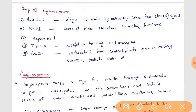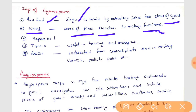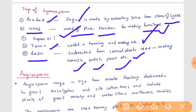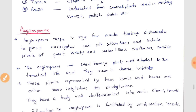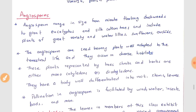Gymnosperms have many uses: sago is made by extracting juice from stems of cycas; wood of pine and deodar is used for making furniture; vapor oil is obtained from gymnosperms; tannin, used for tanning and making ink, is also obtained from these plants; and resin extracted from conical plants is used in making varnish, polish, and paints.